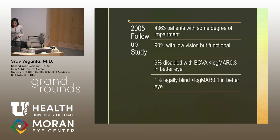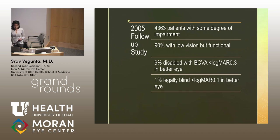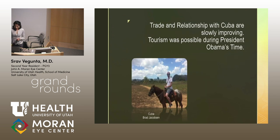In a 2005 follow-up study, over 4,000 patients were evaluated, and 90% still had low vision but were called functional. Only about 10% had visual acuity better than 20/40. Trade with Cuba is now slowly improving and tourism is also possible.